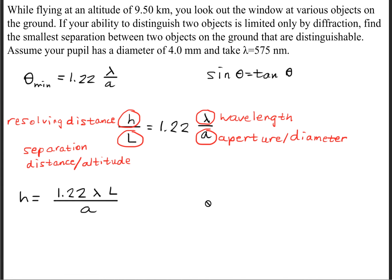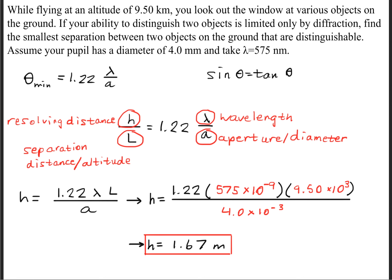So we rearrange the equation, and we get that h equals 1.22 times lambda times L divided by a. Using the given information, we'll take these numbers, convert them into standard units of meters, and we'll get that the h variable, or the resolving distance, is 1.67 meters.